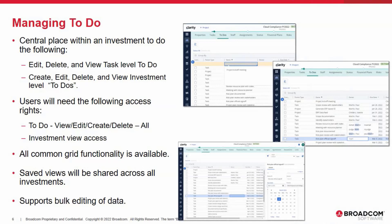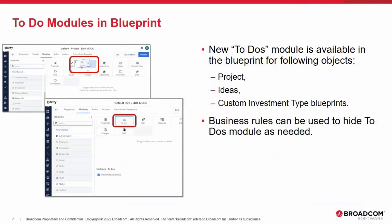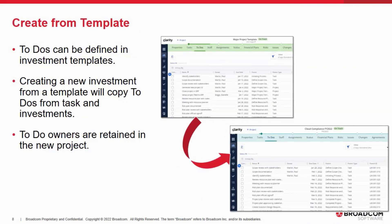Because the new To-Do module uses the common grid, all common grid functionality is available, such as export to CSV, saving of views, and bulk editing of data so multiple To-Dos can be selected and edited in one central place. This new To-Do module is available in the Projects, Idea, and Custom Investment Type Blueprints. Business rules can also be defined against these To-Do modules to hide them where not needed.